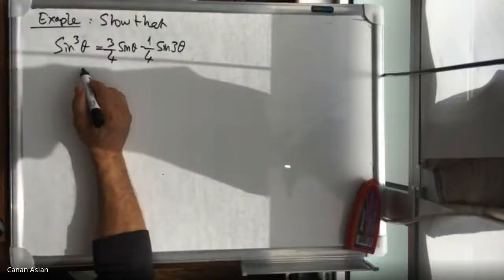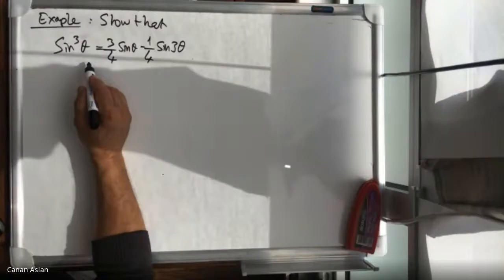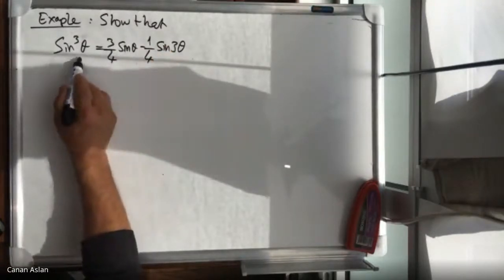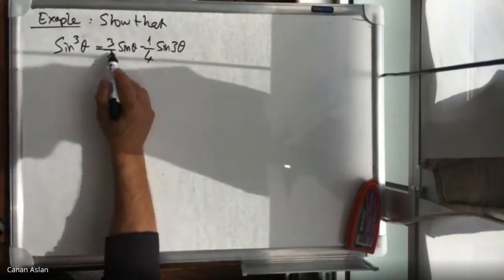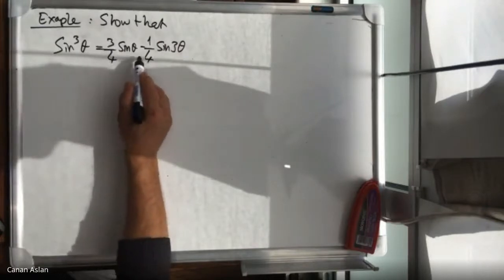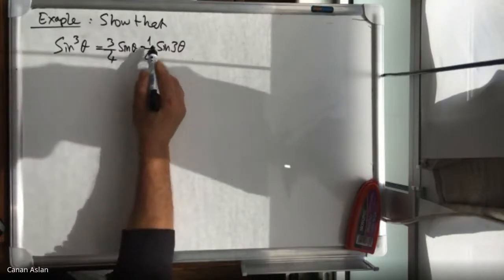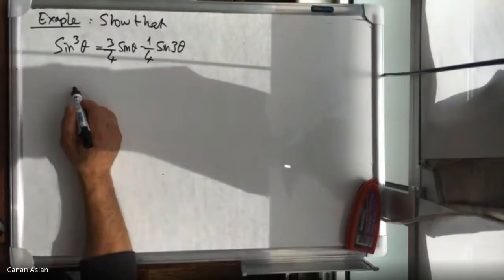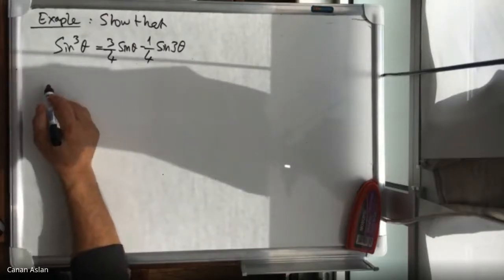We have a problem for physics or mathematical methods in physics. In this example we have to show that sine cubed theta is equal to three over four sine theta minus one over four sine three theta.